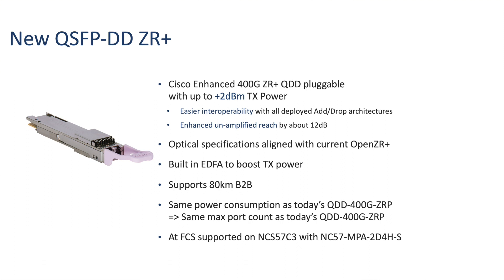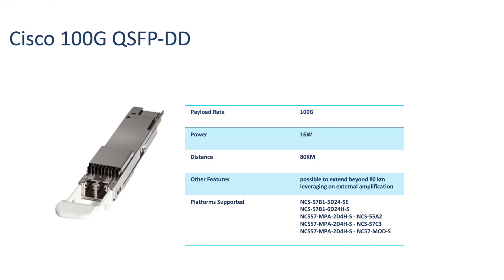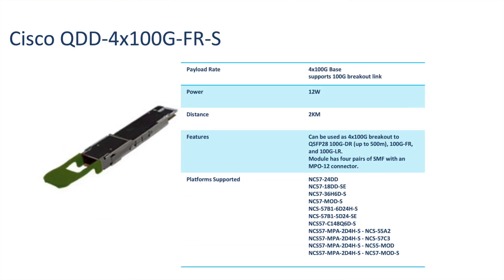Now let us discuss the addition of optic support. With 7.9.1, we introduce the Cisco enhanced 400GB ZR Plus QDD pluggable optics with up to +2 dBm transmit power. It is a new high-power version of the existing 400GB ZR Plus module and has a built-in EDFA to boost the transmit power. It supports 80 km back to back. We also bring in the Cisco 100GB QSFP-DD optics, which provides customers with a 100GB ZR connectivity option for data centers, high-performance computing networks, enterprise core and distribution layers, and service provider applications. It supports signal up to 80 km and more. We also extend the support for QDD 4x100GB FR-S across other platforms of the portfolio.